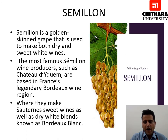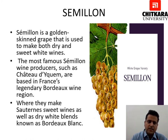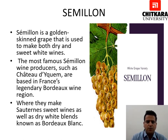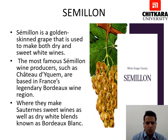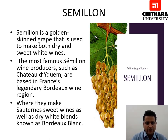The next white grape variety is Semillon, a golden-skinned grape used to make both dry and sweet white wines. Famous Semillon wine producers are based in France's legendary Bordeaux wine region, where they make Sauternes-style sweet wines as well as dry blends known as Bordeaux blends. These wines are very exclusive and are highly ranked among wines all over the world.